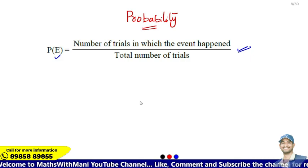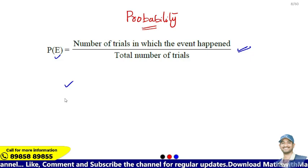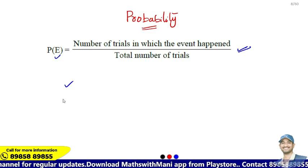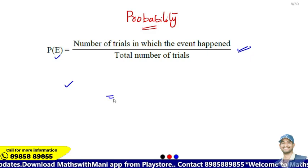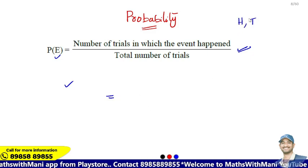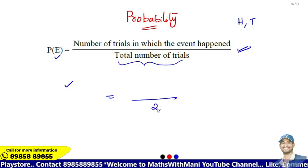Now let's talk about tossing a coin. Find the probability that the coin shows a head. After tossing a coin, you will get either a head or a tail. So the total number of outcomes is two — head or tail.